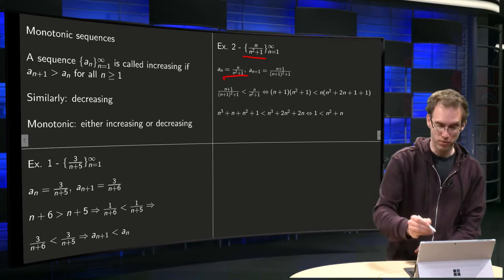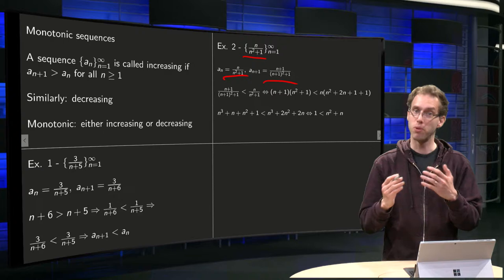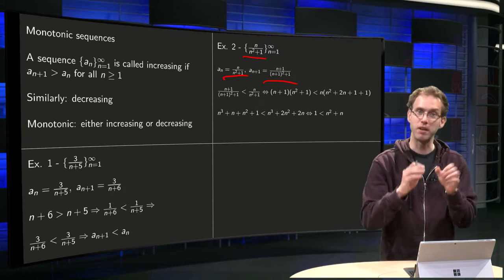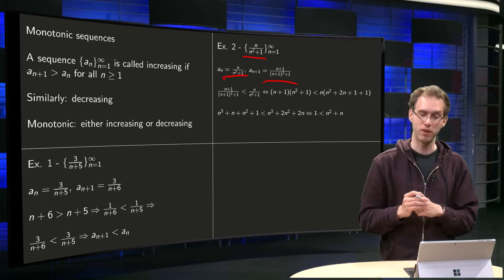So An equals n/(n²+1), and An+1, just plug in n+1 on the place of n, so we get (n+1) divided by (n+1)² + 1.